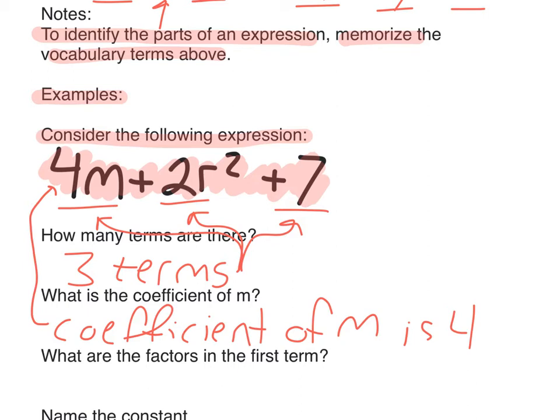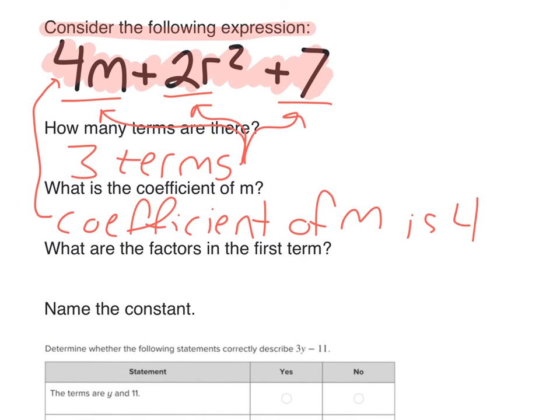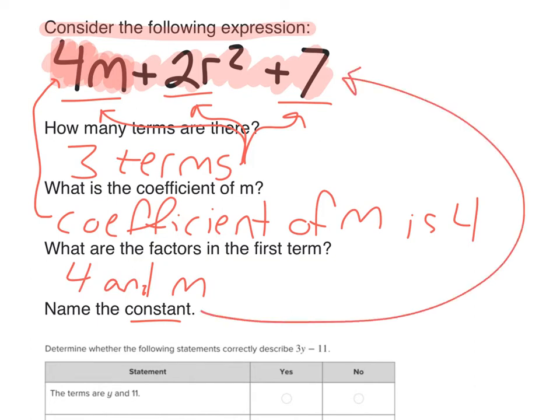Next question. What are the factors in the first term? So the first term is the 4m. The factors are the 4 and m. Name the constant. The constant is the number that's by itself. The constant is 7.